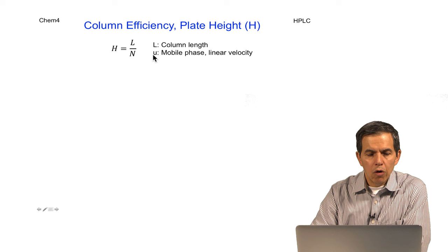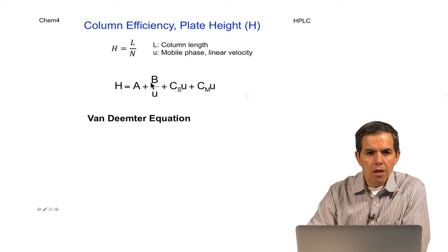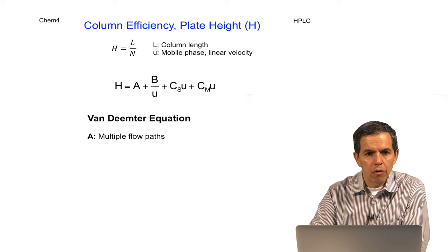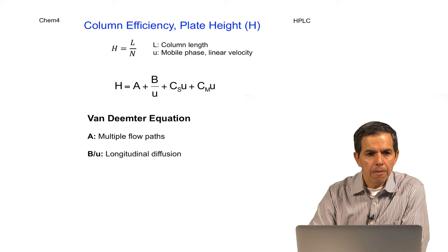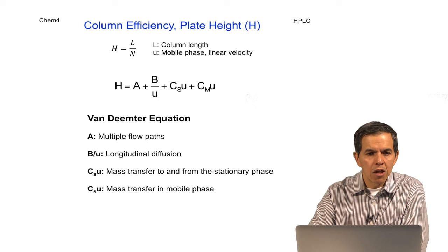All of these concepts can be better understood in terms of the equation known as the Van Deemter equation. This equation consists of several terms: A, B, C sub S, and C sub M. These terms refer to A, the multiple flow paths that an analyte will find on its way through the column; B divided by u, which is related to longitudinal diffusion; C sub S multiplied by u, which refers to the mass transfer to and from the stationary phase; and C sub M multiplied by u, which refers to the mass transfer in the mobile phase.